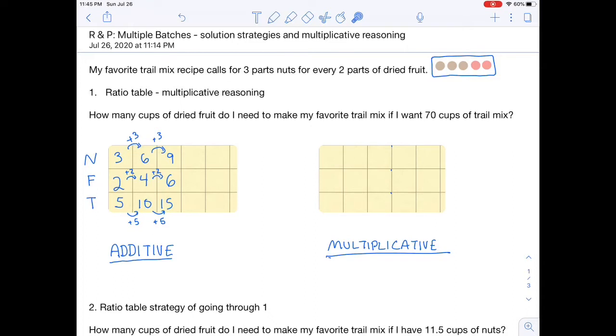We'll continue with the same scenario where I have a trail mix recipe that calls for three parts nuts for every two parts of dried fruit. Now I have a more complicated question that asks how many cups of dried fruit do I need to make my favorite trail mix if I want 70 cups of trail mix?